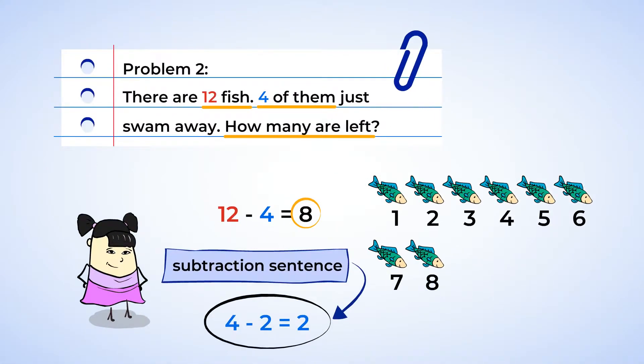When a number gets smaller, like the fish in the river, we can show this with a subtraction sentence. First, we write the total number, how many were taken away, an equal sign, and then how many were left.